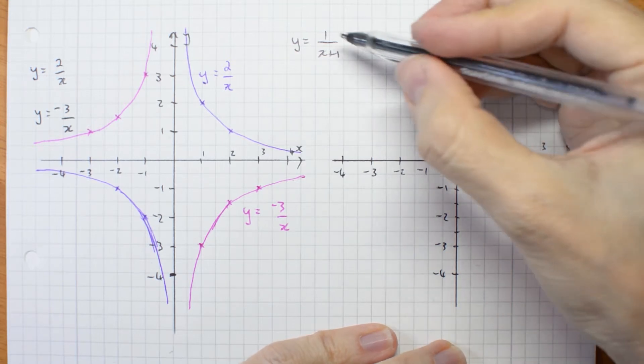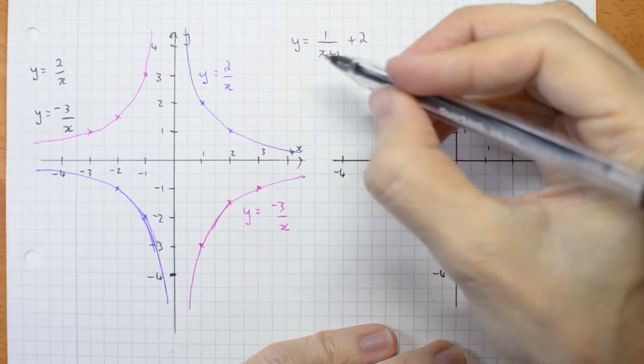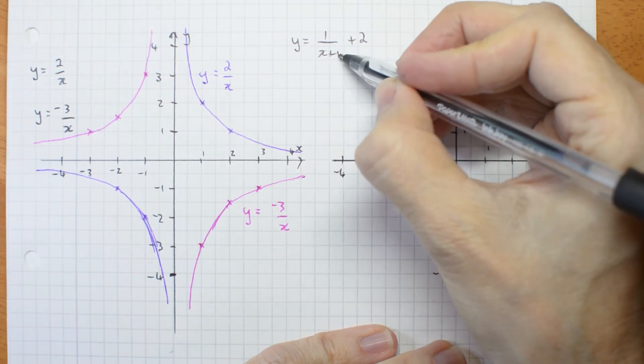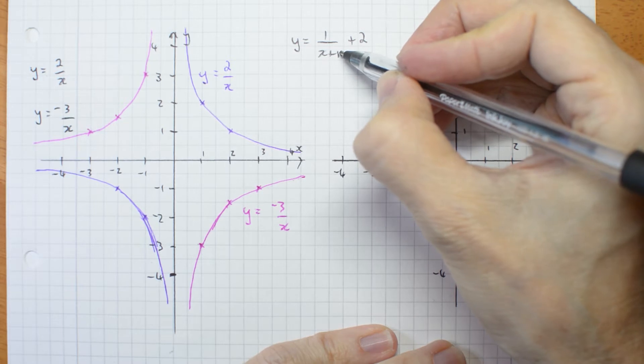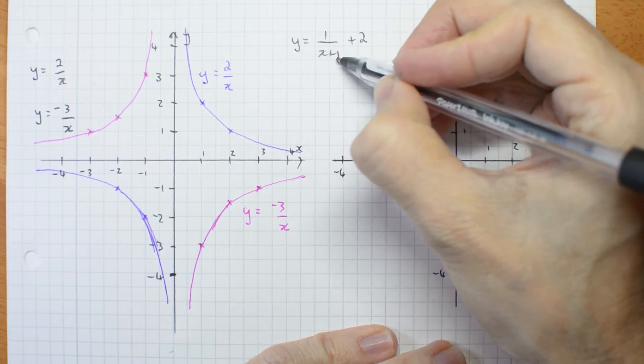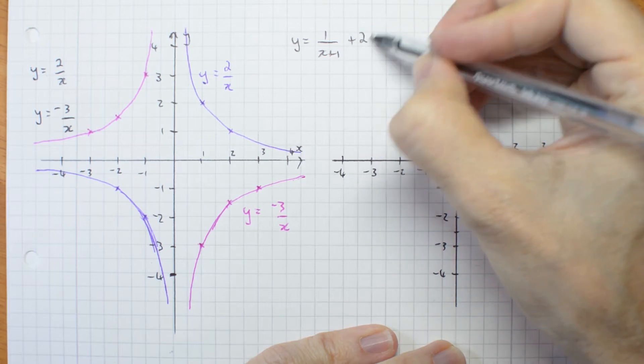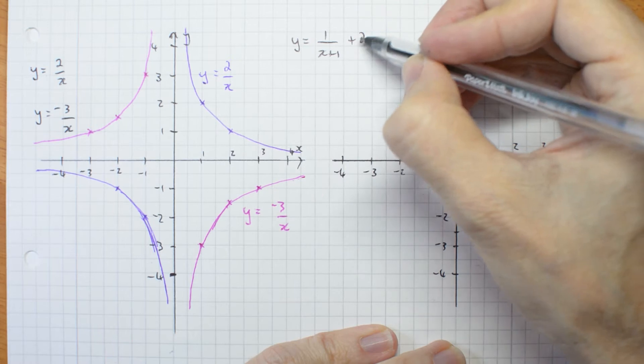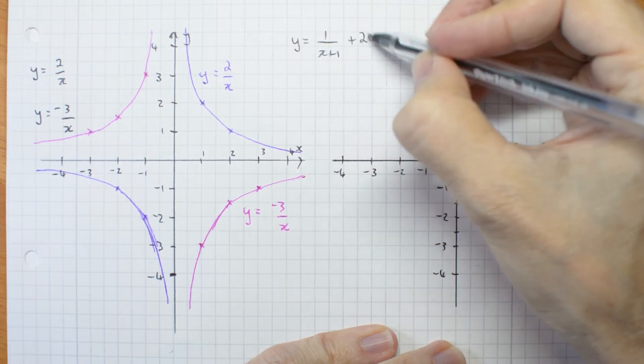So this is y is 1 over x, but it's been shifted left 1. Remember it's minus h, so this is subtracting a negative 1, so it's been shifted left 1, plus 2, so up 2.